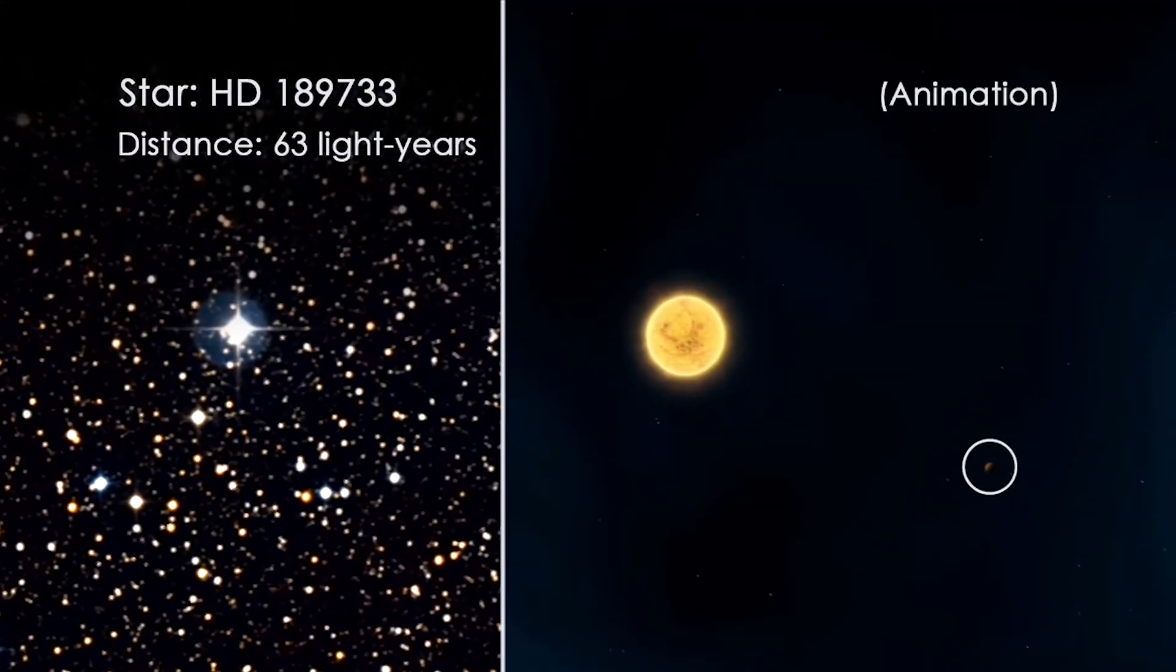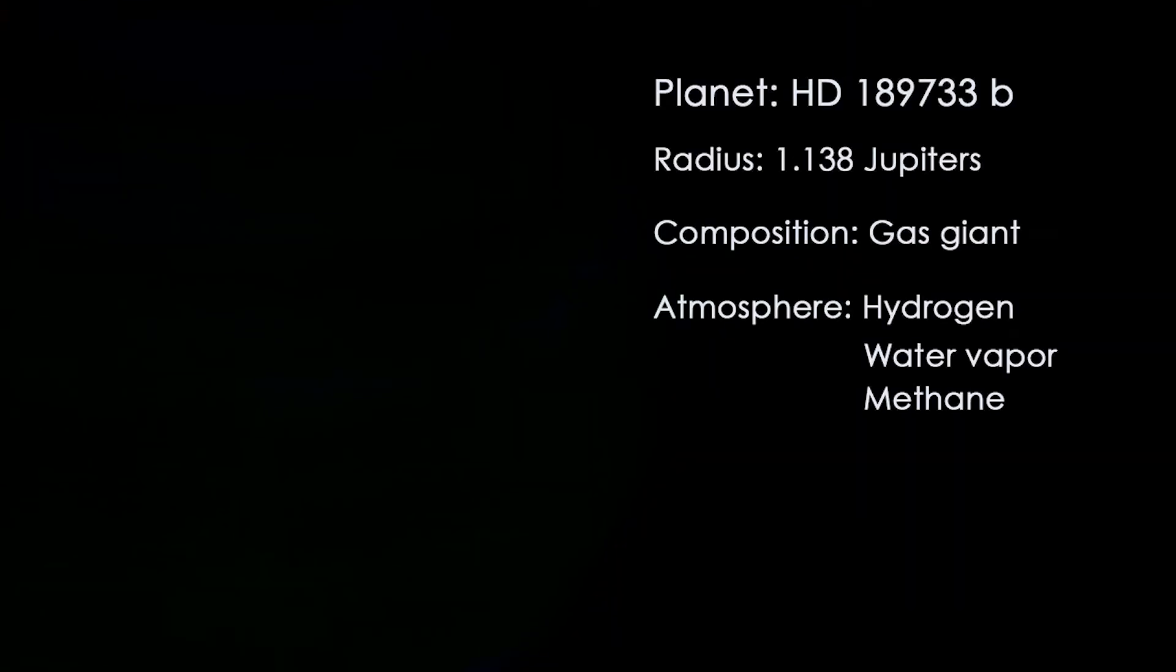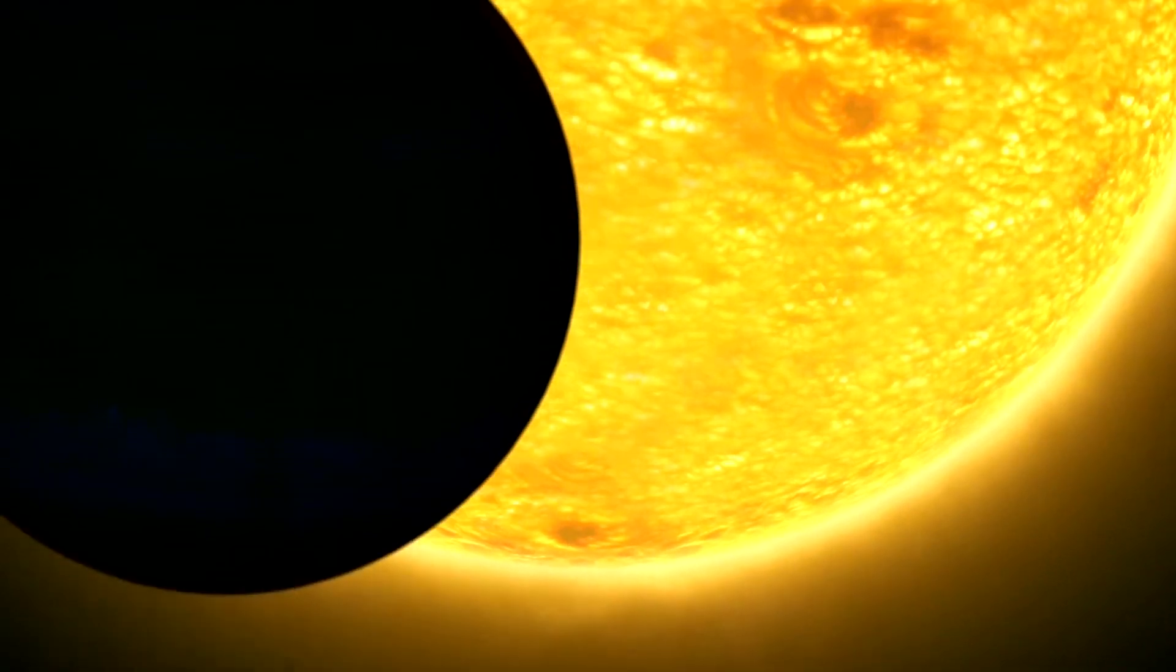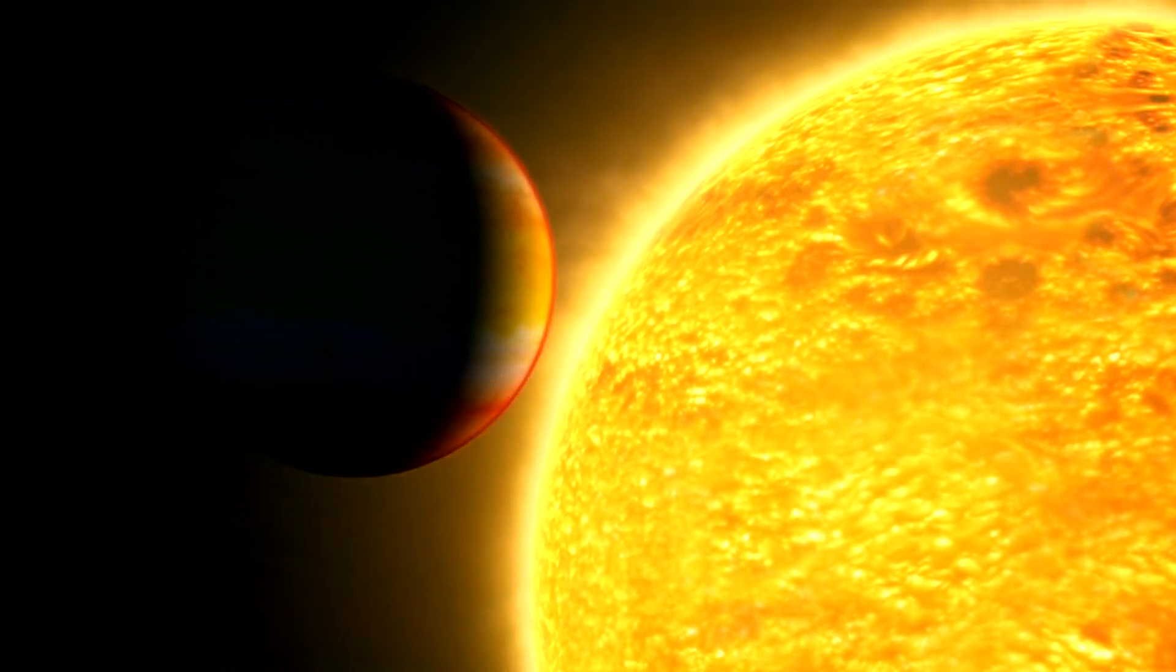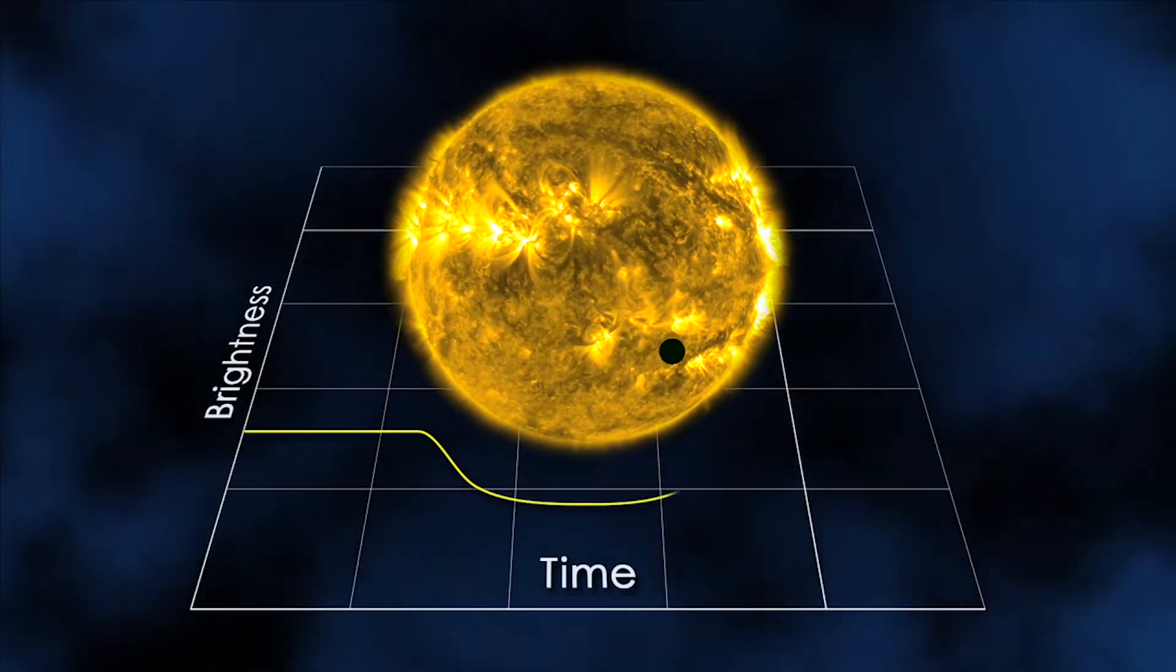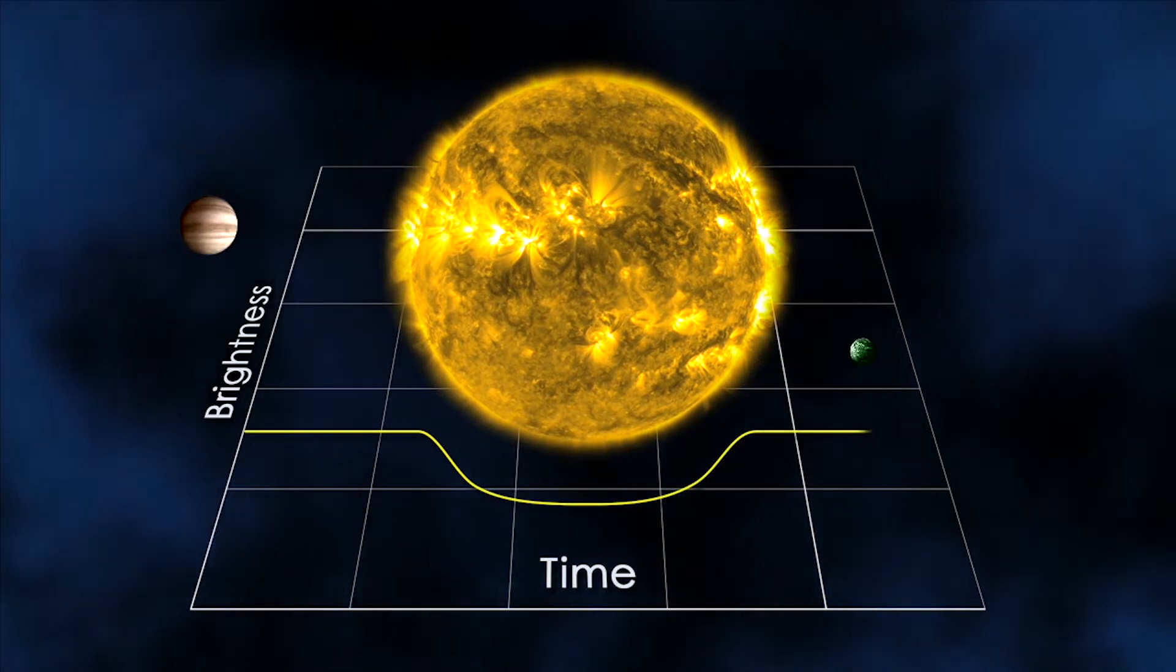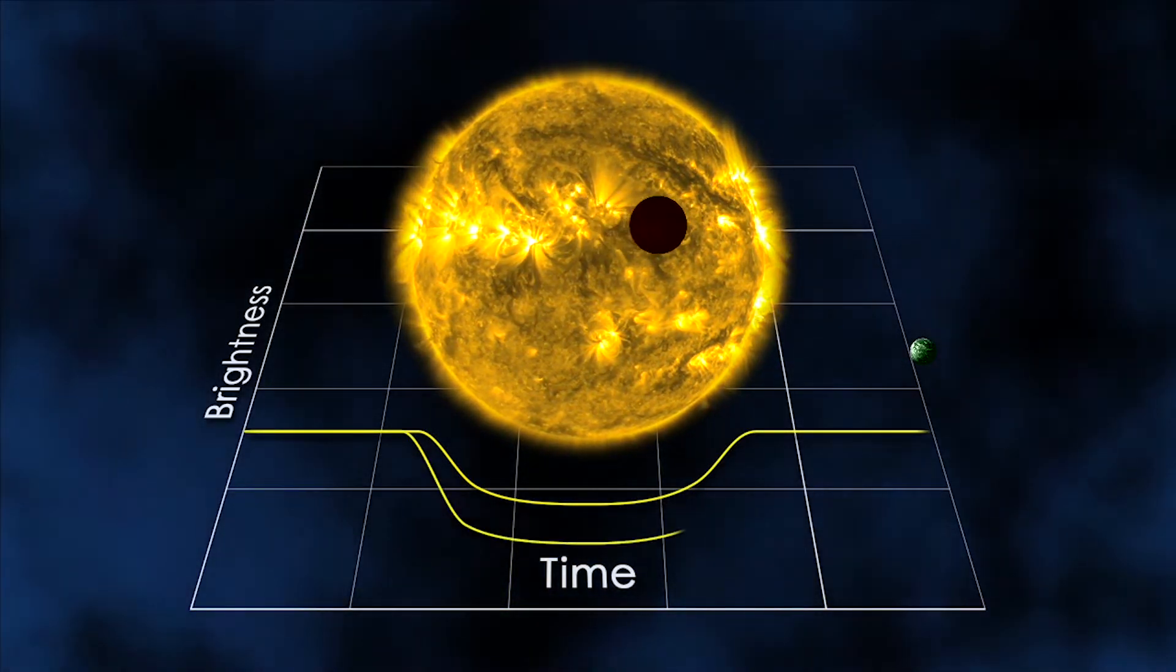Because most exoplanets are too far away to be directly imaged, characteristics such as size, composition, and atmospheric makeup must be determined through a variety of indirect methods. For instance, when an exoplanet passes in front of its star, or transits, it blocks a fraction of the star's light and causes a dip in brightness. Large planets block more light, so the size of the dip can be used to determine the size of the planet.